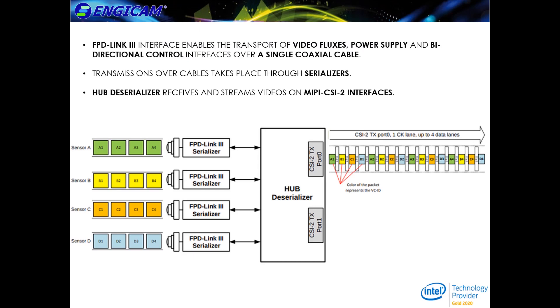We implemented the FPLink3 standard in order to acquire video streams from up to 4 MIPI CSI2 sensors. Serialized data converge in a hub deserializer, which is able to stream multimedia data via MIPI CSI2 interface.